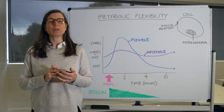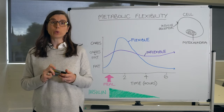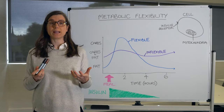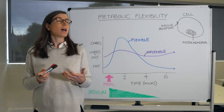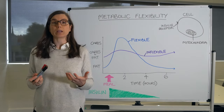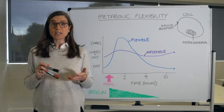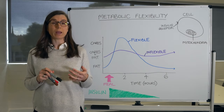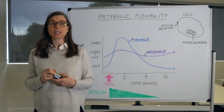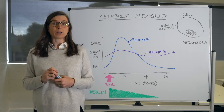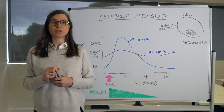Today we're talking about metabolic flexibility or metabolic inflexibility. This is an important concept to understand if you want to understand type 2 diabetes and metabolism, because many metabolic conditions have an element of metabolic inflexibility — including type 2 diabetes, insulin resistance, obesity, fatty liver disease, polycystic ovarian syndrome, and even cardiovascular disease. If you understand what metabolic flexibility is, why you might be metabolically inflexible, and what you can do about it, you can work to correct this.